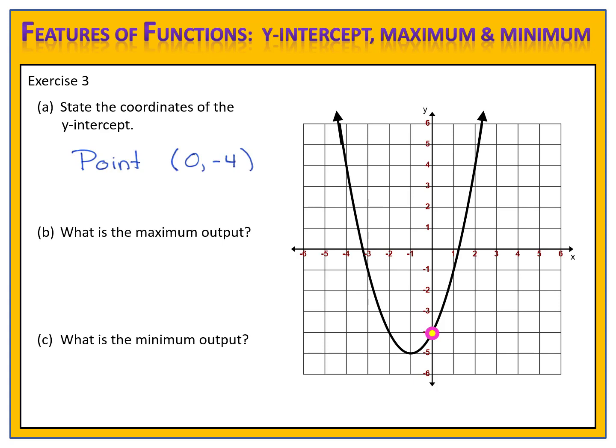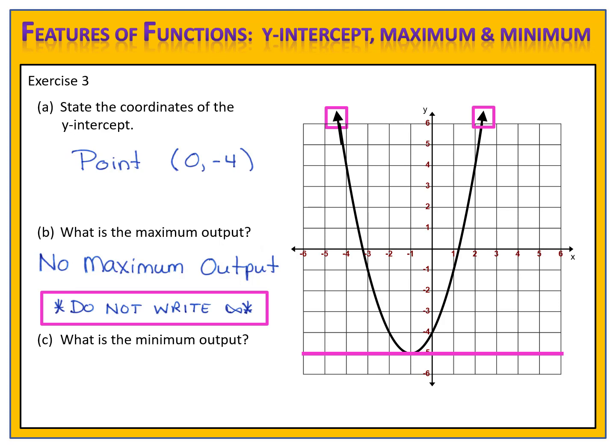Now state the maximum and the minimum output. It's very easy to locate the lowest part of the function, but notice the top of the function has arrows — it goes up forever. Is there a maximum height that the function reaches, or does it go up endlessly? When we have arrows going up, the graph goes up endlessly, so we say there is no maximum output. Please be very careful: do not write infinity for the maximum output. Yes, the graph goes up toward infinity, but infinity is simply a direction, not an output. So it would be improper to write that the output was infinity. The correct thing to say is that there is no maximum output.